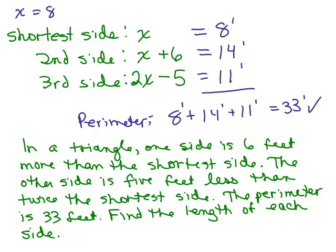The other side is 5 less than twice the shortest side. So if the shortest side is 8, twice that would be 16, and 5 less than that, that'd be 16 minus 5 is 11. So everything checks out.